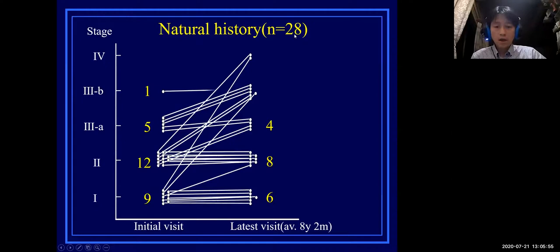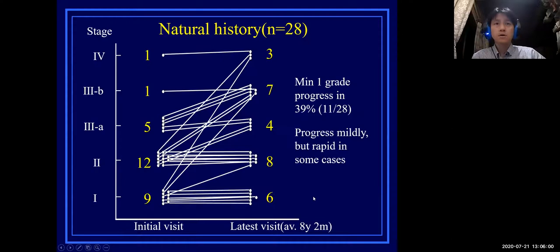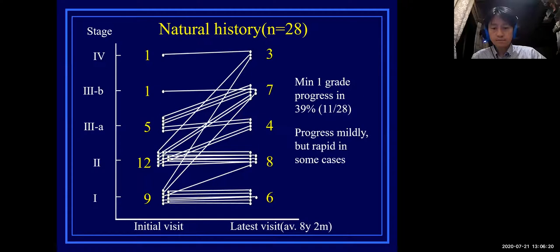This slide shows the natural history of 28 cases of ankle arthritis with an average follow-up of eight years. A minimum one-grade progression was seen in 39% of cases, and in some cases three or four grades of progression were observed. Most cases showed mild progression, but some followed a rapid course.